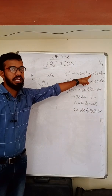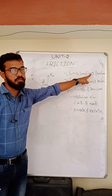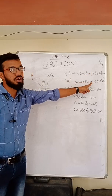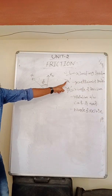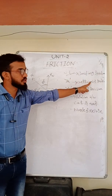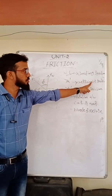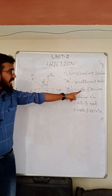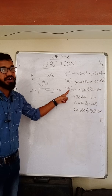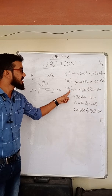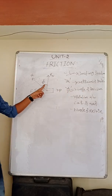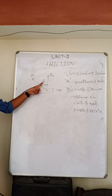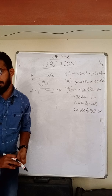To summarize so far: limiting friction is the maximum value of frictional force when a body is about to slide. Coefficient of friction, denoted by μ, is the ratio of limiting friction to normal reaction — μ = F/Rn. Angle of friction, denoted by φ, is defined as the angle made between the resultant force and the normal reaction.